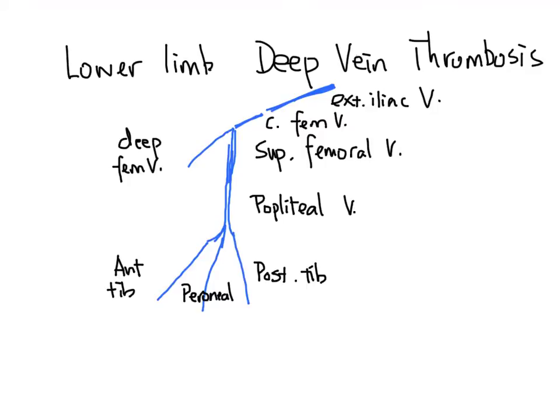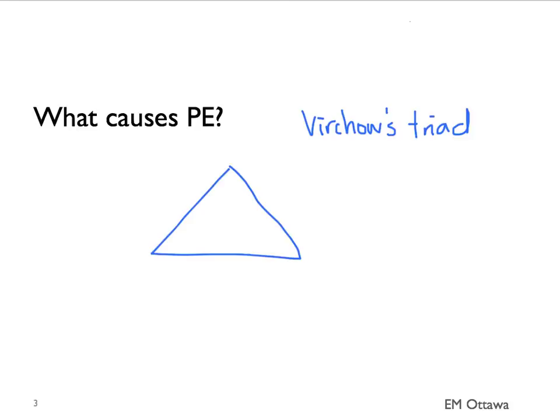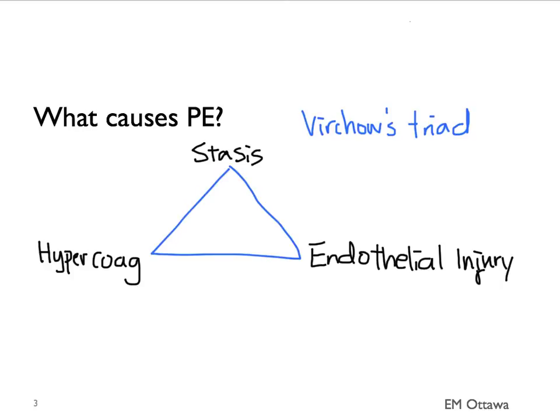Any clot in the deep vein system has a chance of migrating into the lung and causing a PE. What causes PE? In Virchow's triad, there are three main reasons for thrombus formation: stasis, where the blood has not been moving very much; hypercoagulability; and endothelial injury.